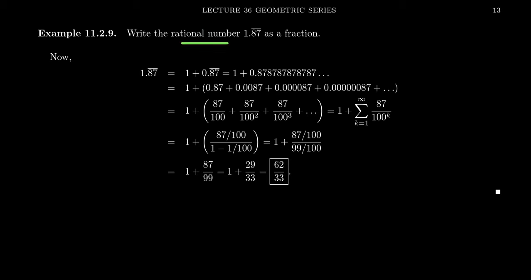Consider the rational number 1.87 repeated. The 87 after the decimal will be repeated. So this is the number 1.87878787 and so on. You just repeat this over and over again.